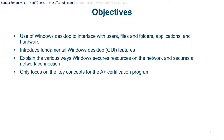The primary objectives of this lecture are to learn the use of Windows Desktop to interface with users, files and folders, applications and hardware. We'll introduce you to the fundamental Windows Desktop GUI features, also known as graphical user interface features. We'll explain the various ways Windows secures resources on a network and secures network connections, and we will cover the key concepts that will be important to the A-plus certification program. We will not go over any advanced concepts related to Windows Desktop configurations — those can be found on my YouTube channel, but they won't be part of your A-plus certification program.